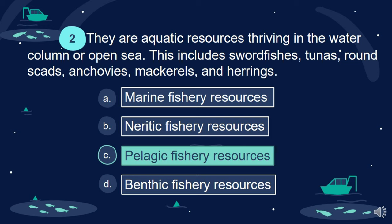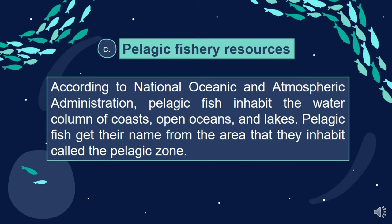Answer: C. Pelagic fishery resources. According to the National Oceanic and Atmospheric Administration, pelagic fish inhabit the water column of coasts, open oceans, and lakes. Pelagic fish get their name from the area that they inhabit, called the pelagic zone.